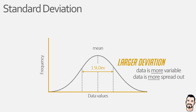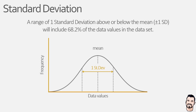One final note when using standard deviation: this calculated value lets us know that if we went above or below the mean value by one standard deviation, then it would include 68.2% of the data values in our data set. So if we use our second example, the mean value was 232 monocytes per microlitre. If we went one standard deviation below — so 232 minus 43.4 — and one standard deviation above — so 232 plus 43.4 — then 68.2% of our data values will fall between 188.6 and 275.4.